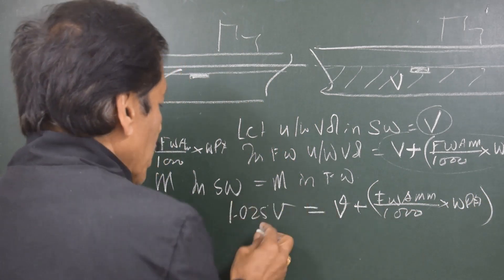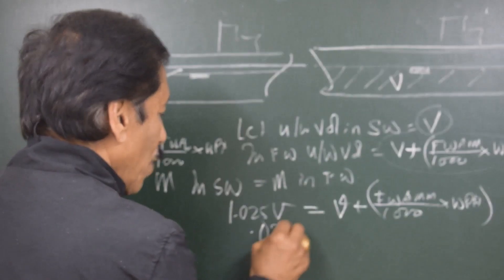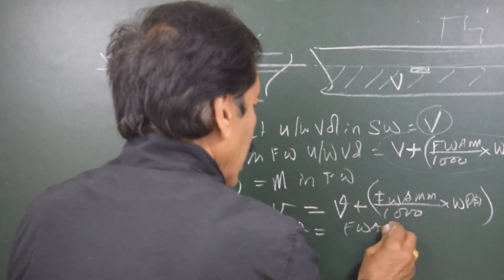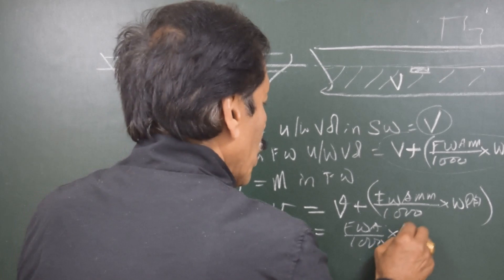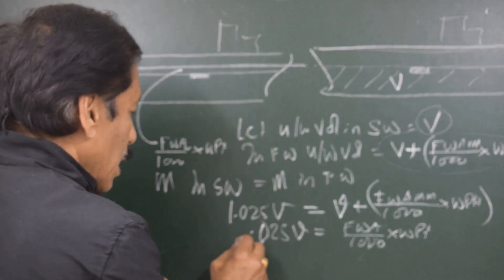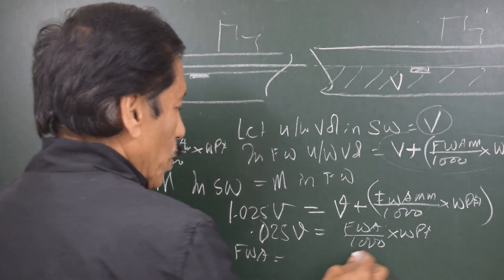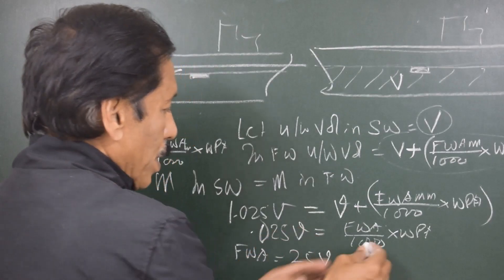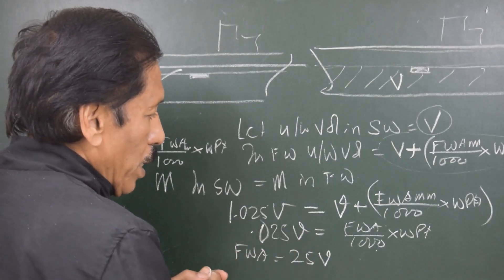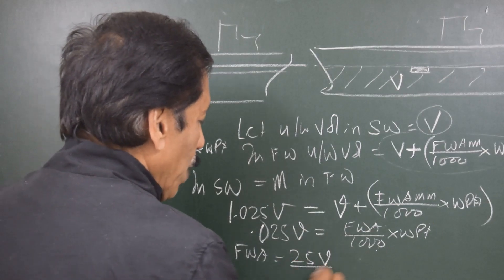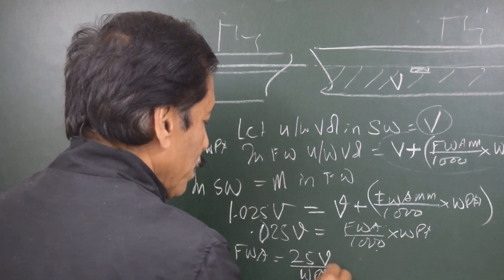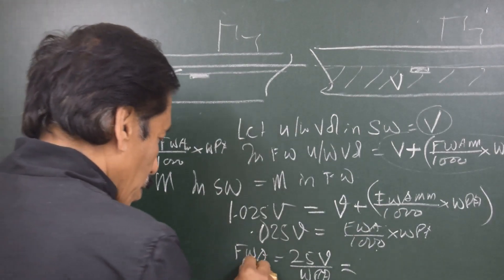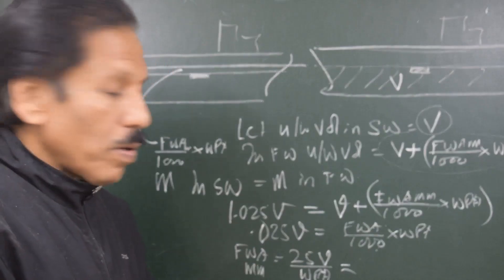If underwater volume in salt water is V, then mass in salt water is 1.025V. In fresh water, mass equals (V + FWA in millimeters / 1000 × water plane area) × 1. Setting these equal: 0.025V equals (FWA in millimeters / 1000) × water plane area. Therefore, fresh water allowance in millimeters equals 1000 × 0.025V divided by water plane area, which simplifies to 25V divided by water plane area.